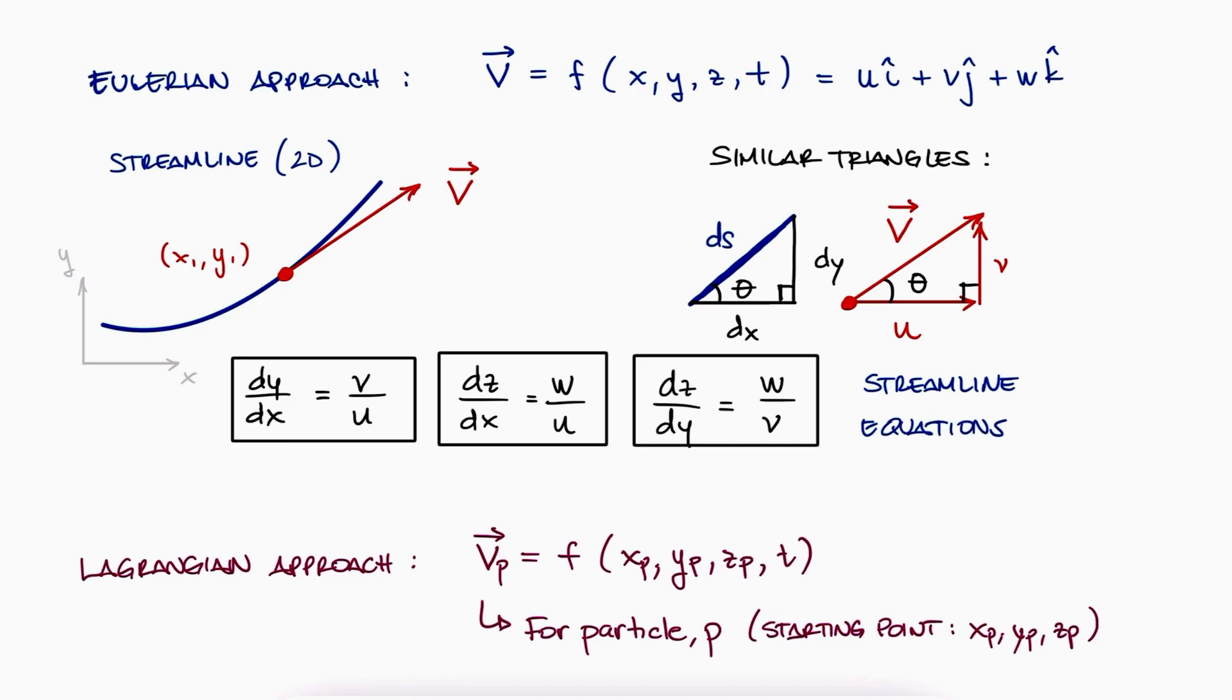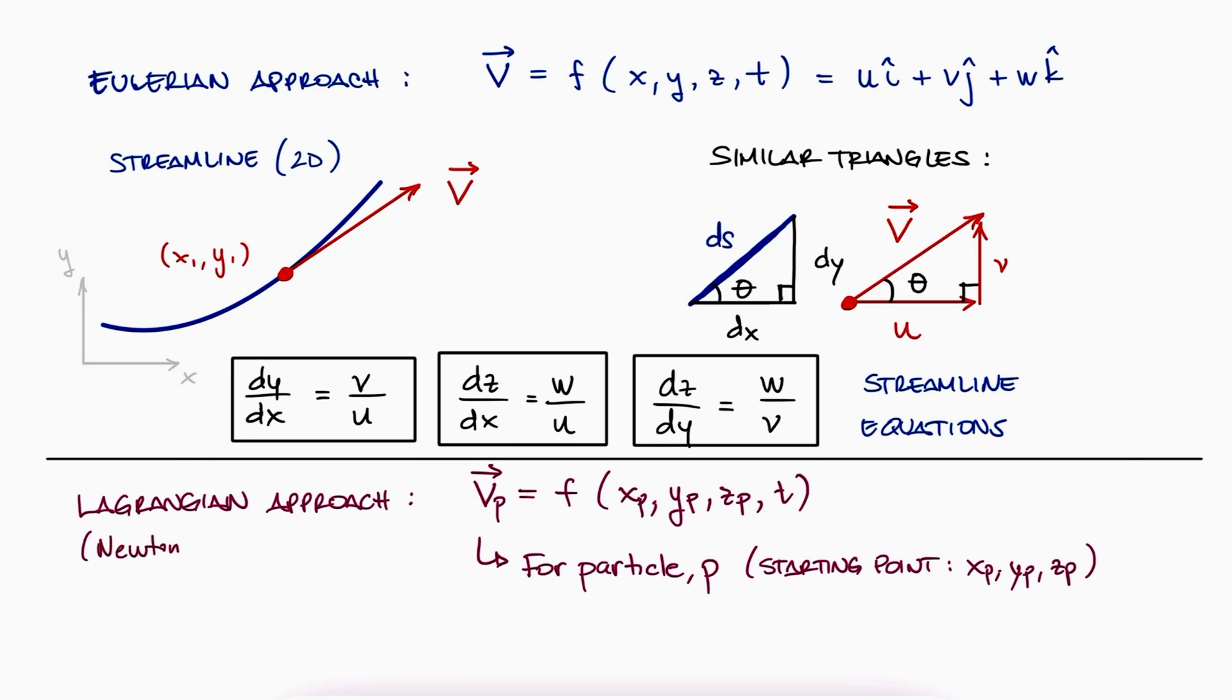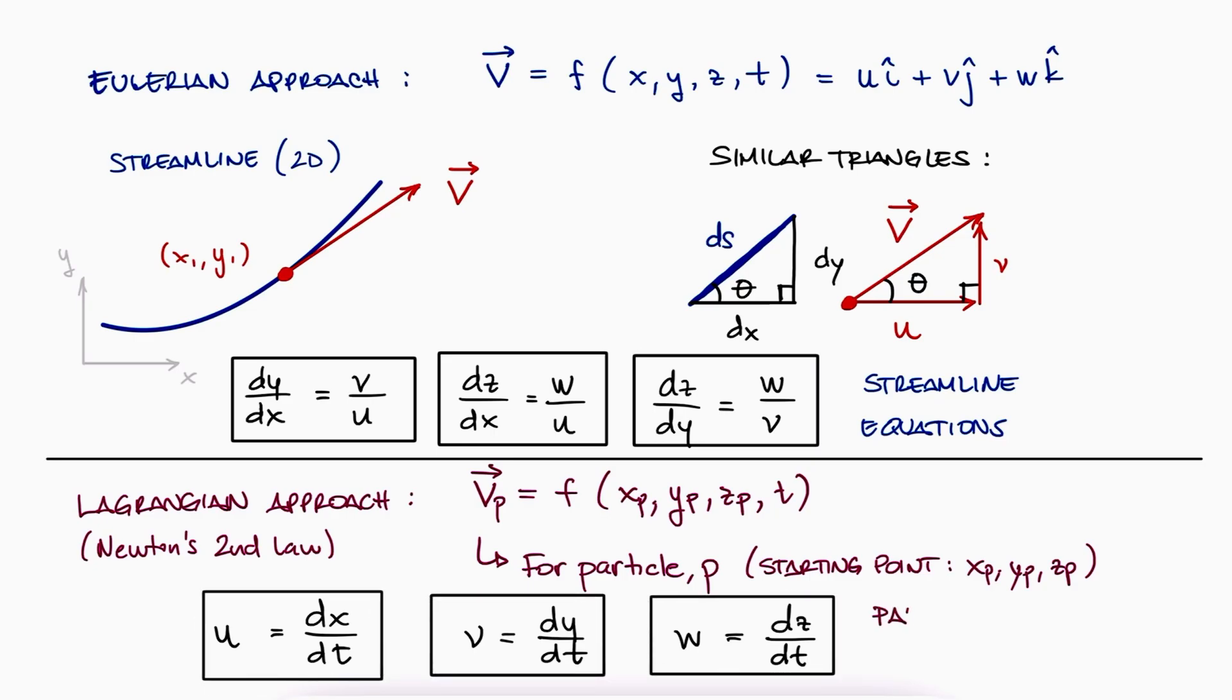Now, for pathlines, we have a particle that started at location xp, yp, and zp moving along its own path. The particle itself should of course follow Newton's second law. The fact that pathlines are the flow lines that follow a Lagrangian method tells us that we can write the velocity in x, u, as dx/dt. And the same for the y and z axes. These are the equations we would use to describe or solve a pathline.